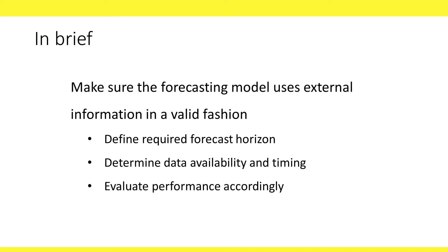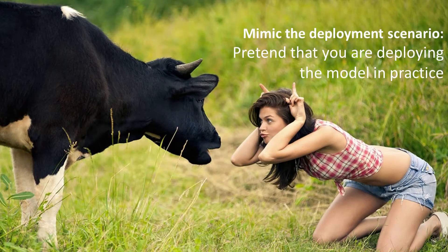To summarize: make sure your forecasting model uses external information in a valid fashion. Think carefully about the forecast horizon needed for the external series. Determine the availability and exact timing of external information. Evaluate performance using training and validation partitioning and predictive accuracy metrics and charts. The best advice is to mimic the deployment scenario — pretend you're deploying the model and think carefully about what data you would have at that moment exactly.